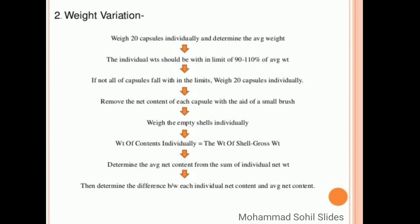If not all capsules fall within the limit, weigh 20 capsules individually, then remove the net content of each capsule with the aid of a small brush. Weigh the empty shell individually, and weight of content individually is equal to the weight of shell minus gross weight. Then determine the average net content from the sum of individual net weight, and after that determine the difference between each individual net content and average net content.